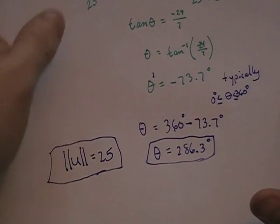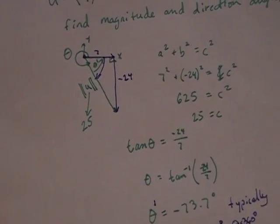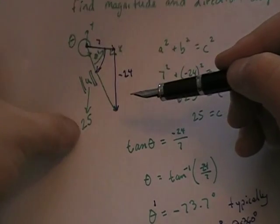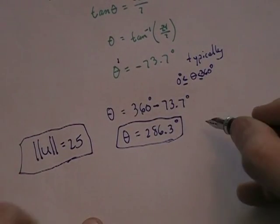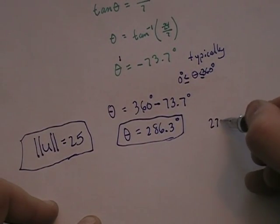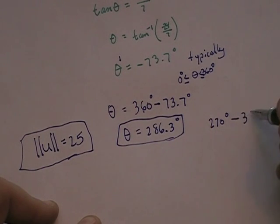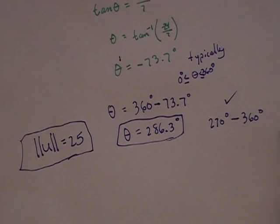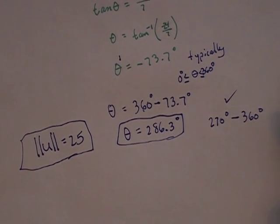And one of the ways I keep up with this is if you were to go right 7 down 24, that's in quadrant 4, which means you need an angle that's somewhere between 270 and 360, right? And this fits that window. So that makes sense based on the original information.